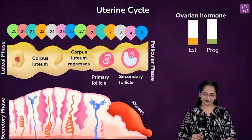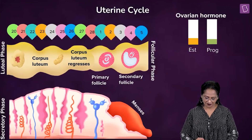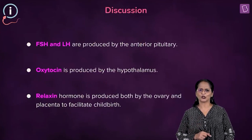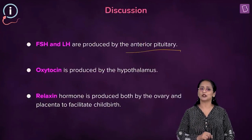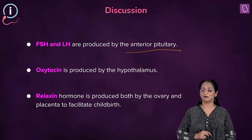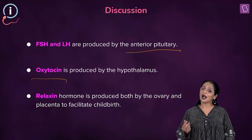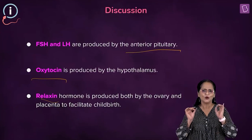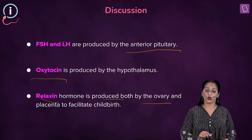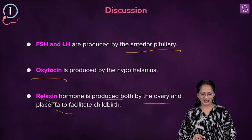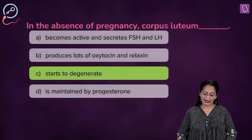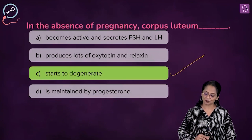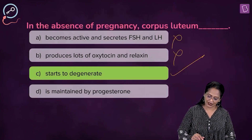It's also called the secretory phase. FSH and LH are not secreted by the corpus luteum — they are secreted by the anterior pituitary gland. These are gonadotropins. Oxytocin is produced by the hypothalamus, and relaxin is a hormone necessary for childbirth, produced by both the ovary and the placenta. So the right answer is C — in the absence of pregnancy, corpus luteum starts to degenerate. You can eliminate A, B, and D.